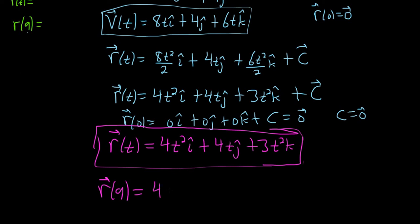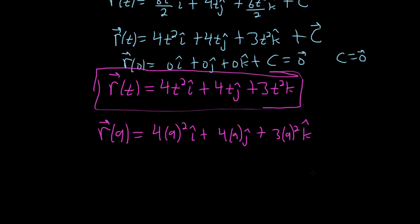So we have 4 times 9 squared i hat plus 4 times 9, well I can do that one in my head, plus 3 times 9 squared k hat. The first one was intimidating, 4 times 9 squared. I could probably, you know, it's 4 times 81, so it's not too bad.